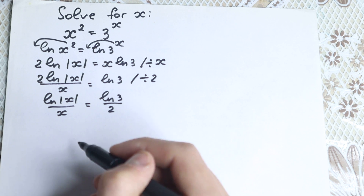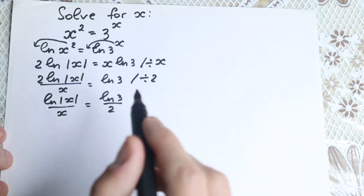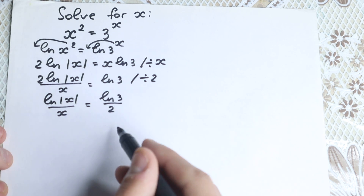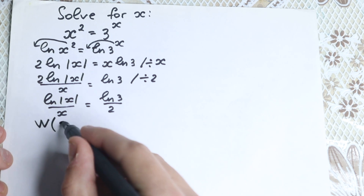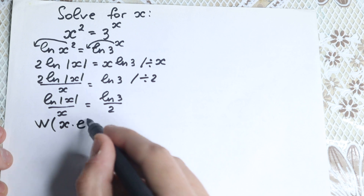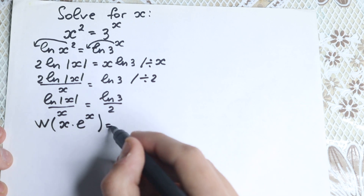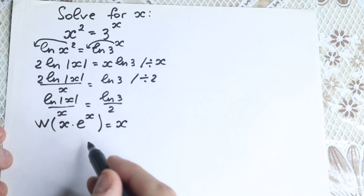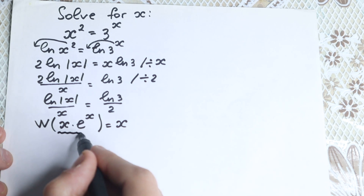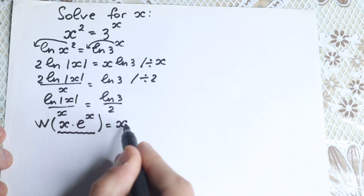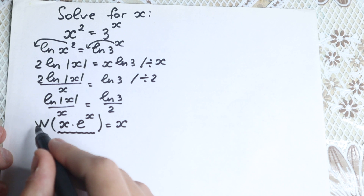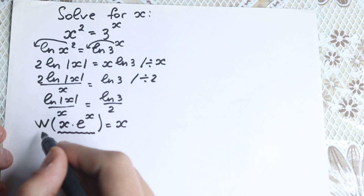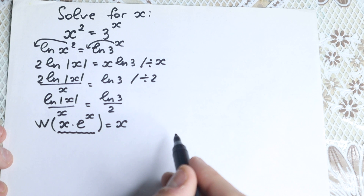Now let's try to remember the Lambert W function. What is this function? The Lambert W function is defined by the expression: if we have x times e to the power x, applying W to that gives back only our x. So W(x · e^x) = x. This simplifies our expression a lot.